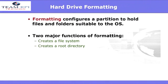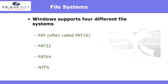Next, let's take a look at how to format your hard drive. Formatting configures a partition to hold files or folders suitable to whatever operating system you're installing. The two major functions of formatting are to create a file system and to create a root directory. The Windows operating system supports four different file system types: FAT — you'll see that referred to as FAT16 — FAT32, FAT64, and NTFS.